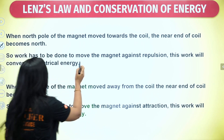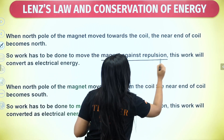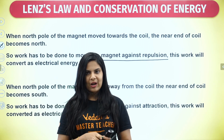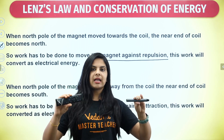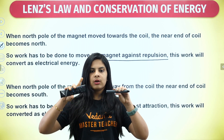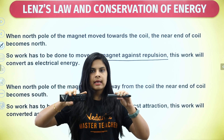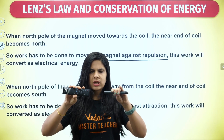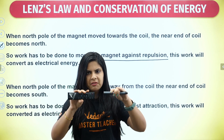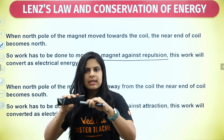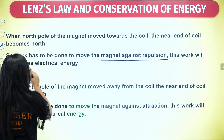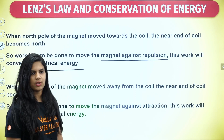Work has to be done to move the magnet against repulsion. The north pole of the magnet approaches the solenoid near end, and the solenoid near end becomes north, causing repulsion. We work against this repulsion, and that work is stored as electrical energy.